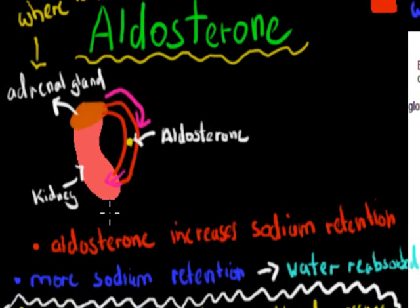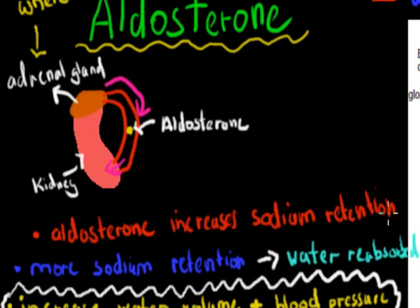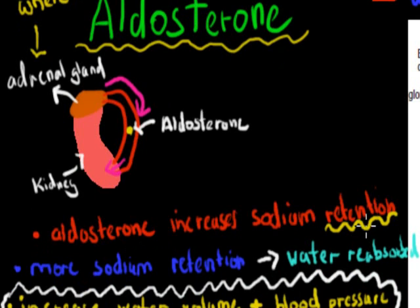So what aldosterone actually does: aldosterone increases sodium retention. Retention means it's holding on to it — it tries to make sure that urine loses less sodium; we hold on to sodium. And the more sodium we keep, the more water is reabsorbed too. We're going to go over why that happens in a second, but the more sodium we keep, the more water is reabsorbed.